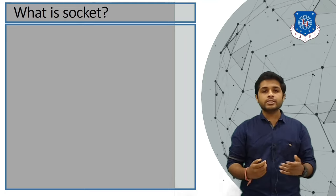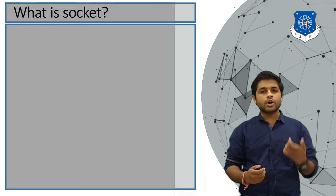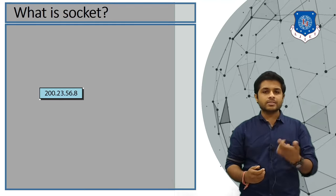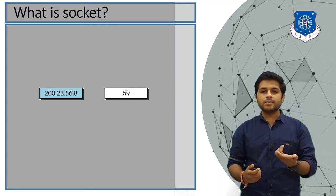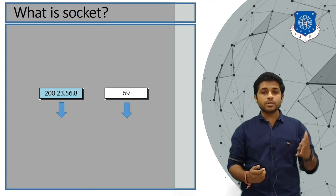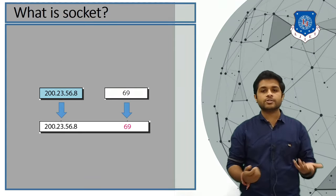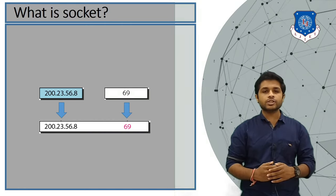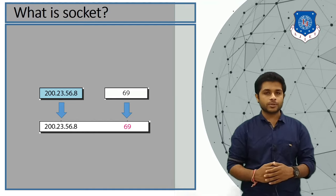Now let's see what a socket is. A socket is simply a combination of the IP address and the port address. When an IP address and a port address assigned by your operating system in the transport layer are combined together, it is known as a socket. That is it for today's session — if you have any doubts, you can ask in the comment section. Thank you so much.